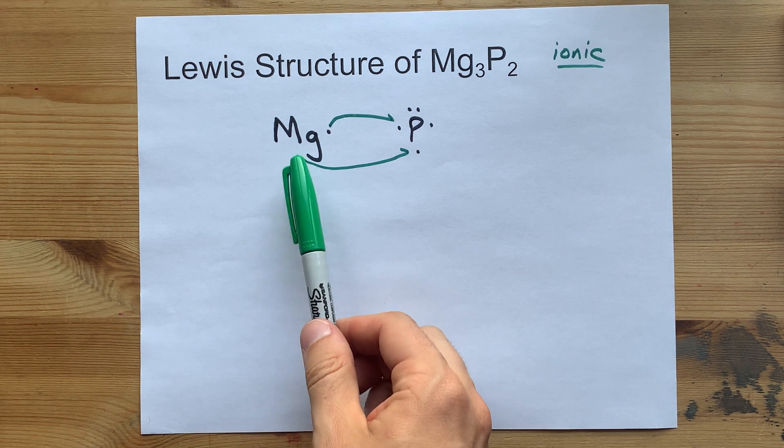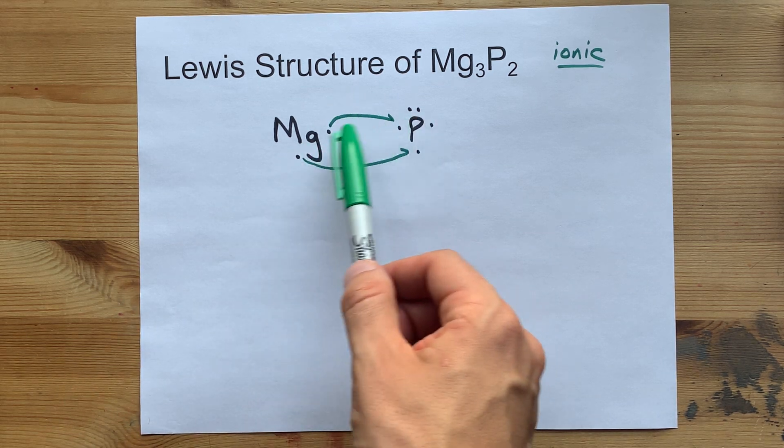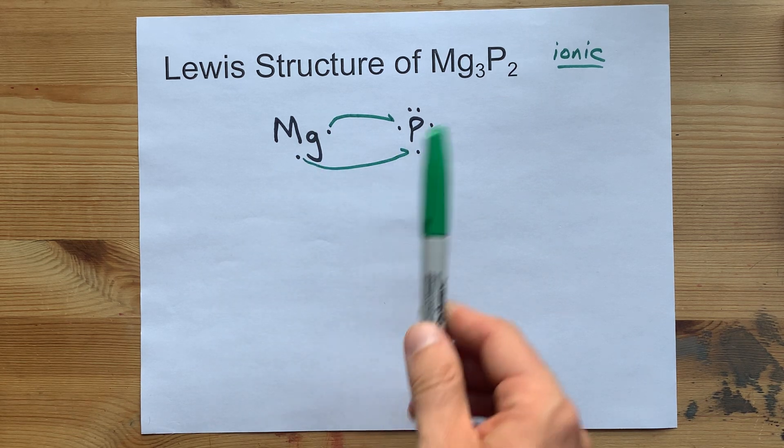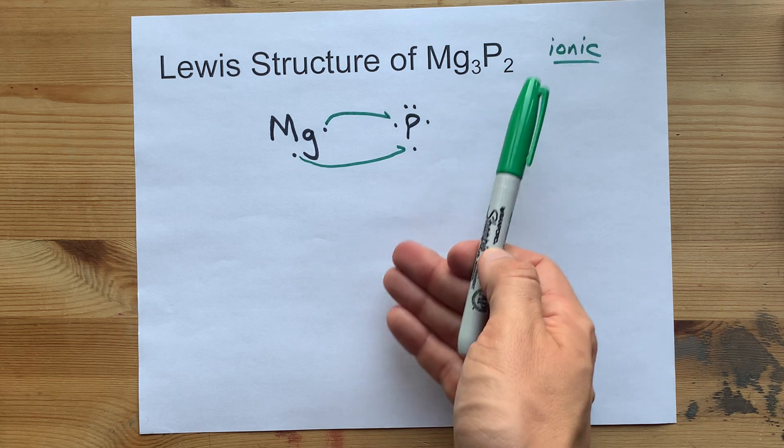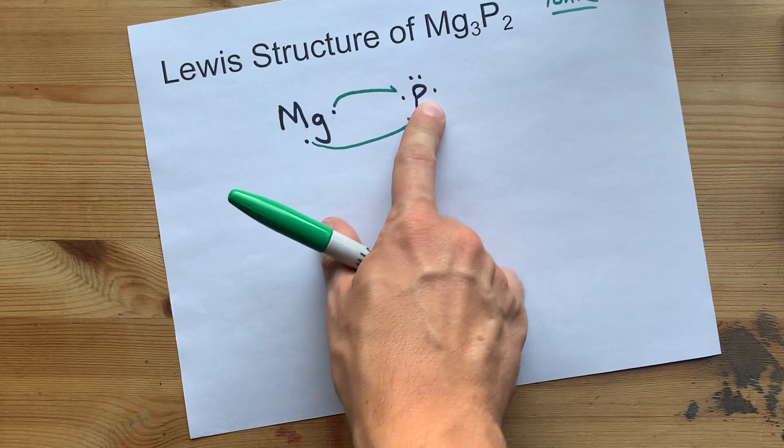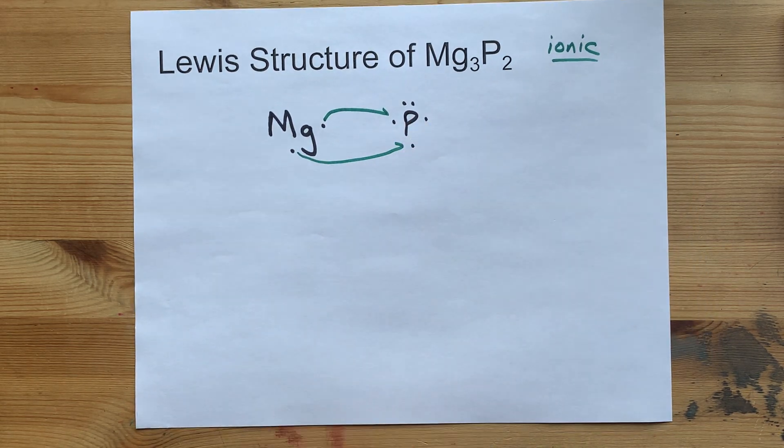So when this magnesium gives away its two electrons, it is now empty. Oh, that's perfect. But the phosphorus brought 5 and gained 2. That's only 7 electrons. This electron still is not paired up with anything.